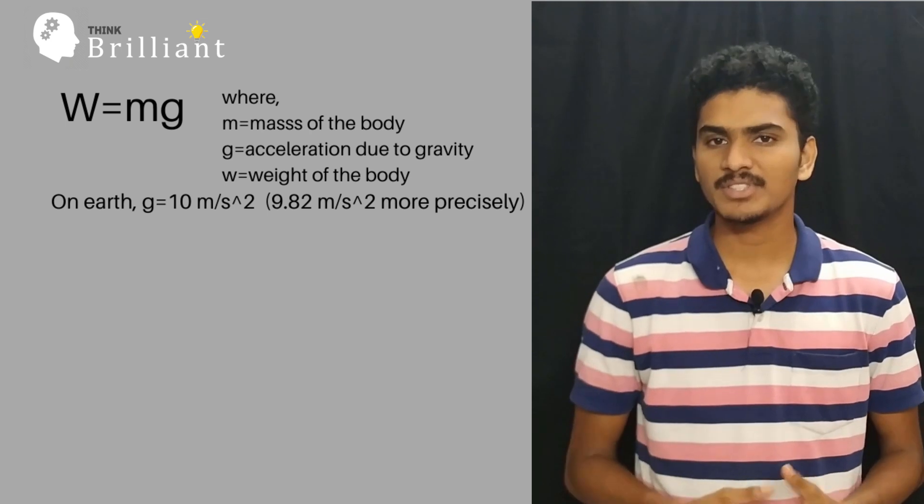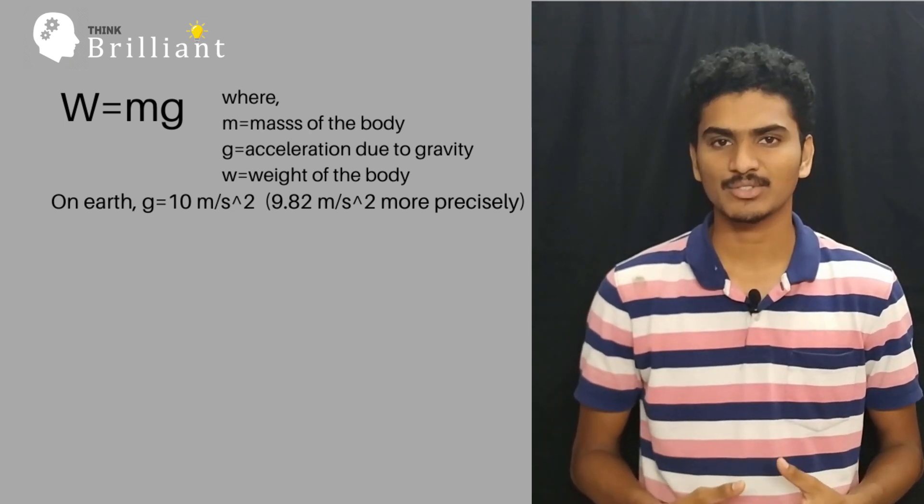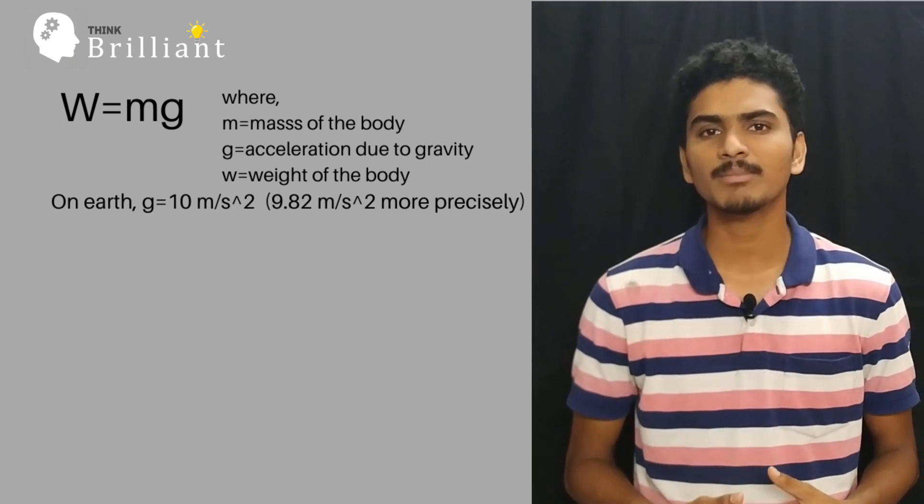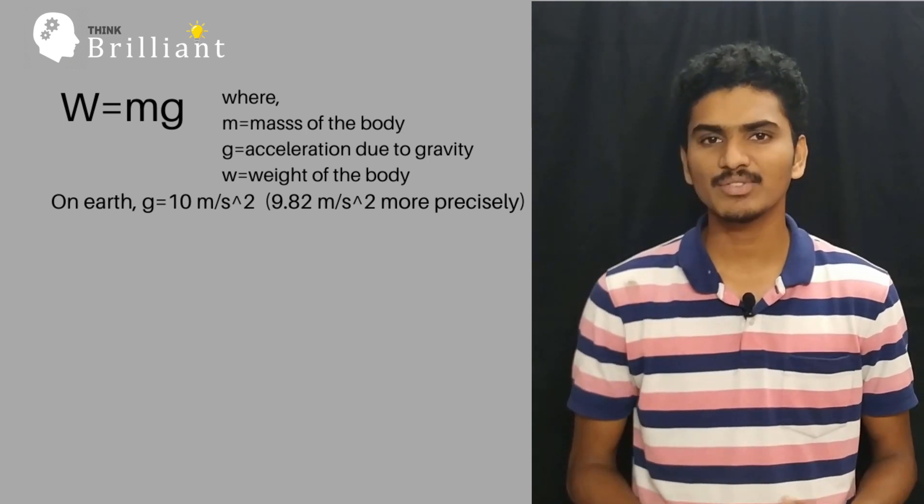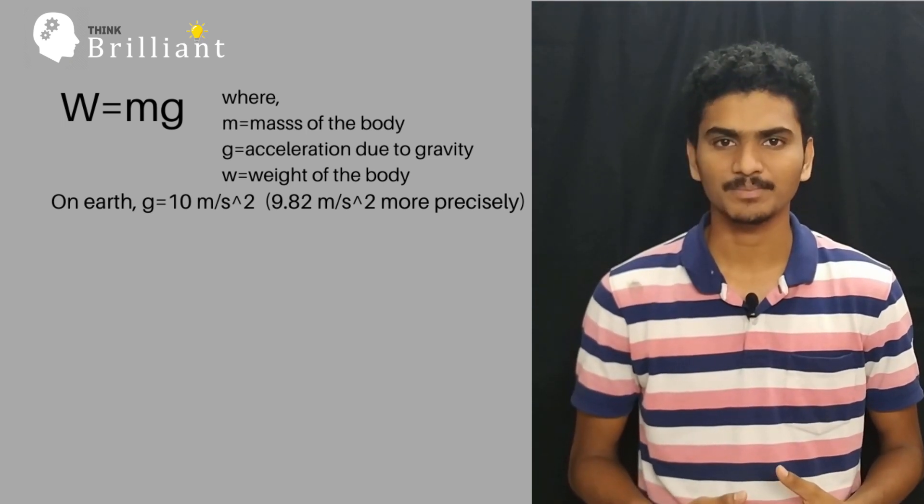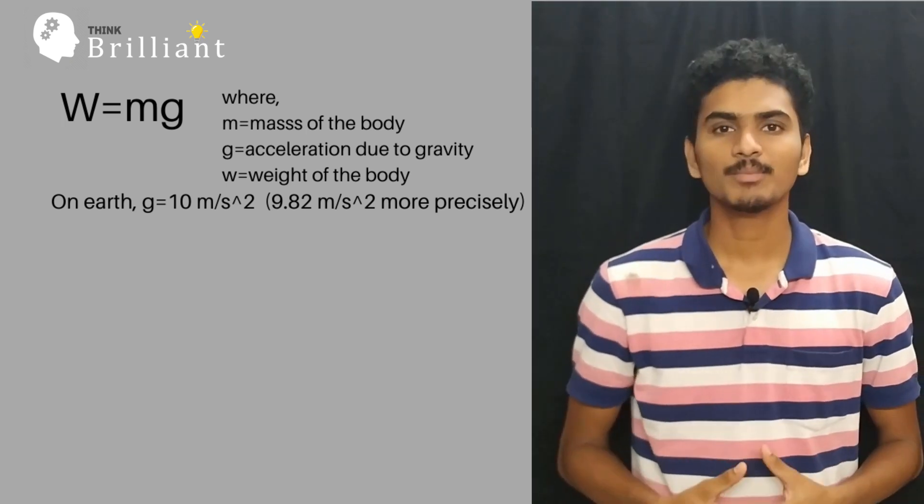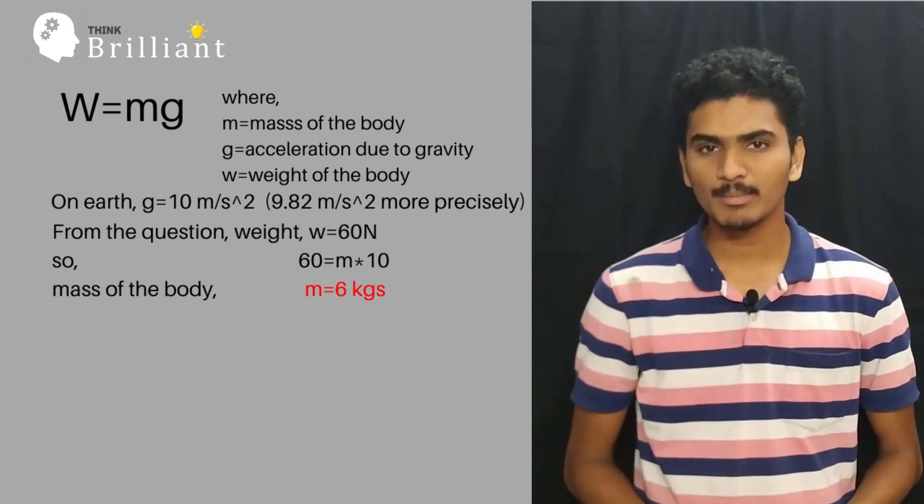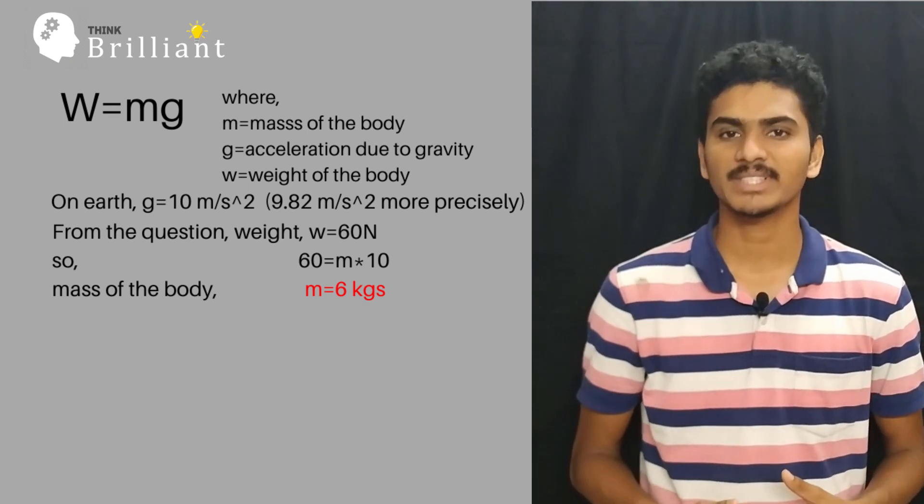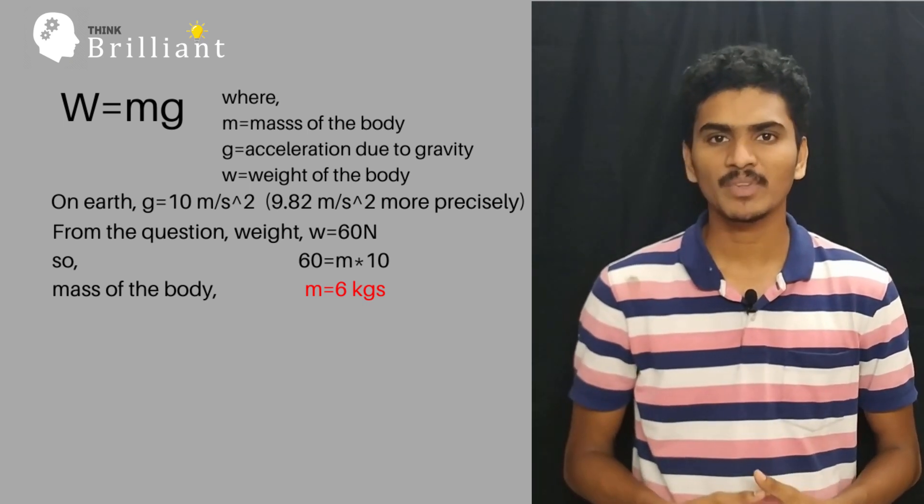Now on Earth, the value of g is approximately 10 m/s² (more accurately it is 9.82 m/s²), but in this video I prefer to use 10 for easy calculation. Now putting the values given in the question, weight W = 60 N and g = 10 m/s² in the relation, we get mass of the person m = 6 kgs.